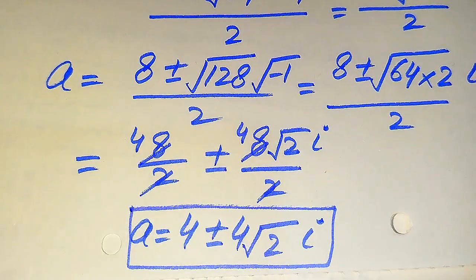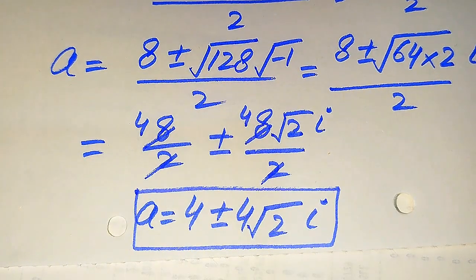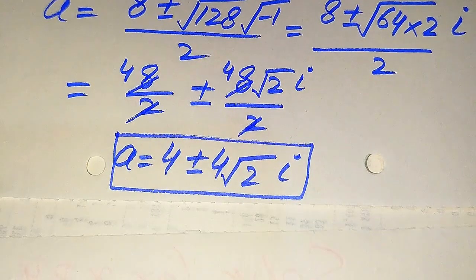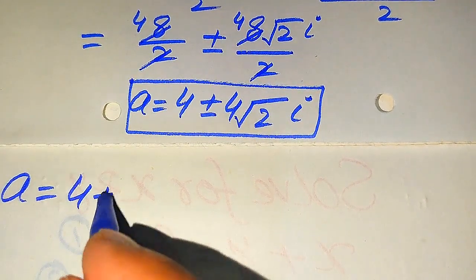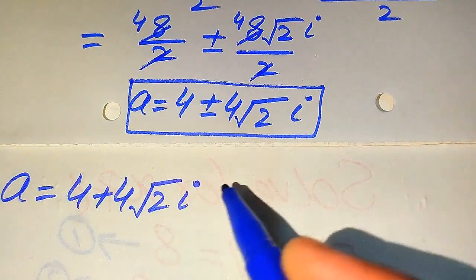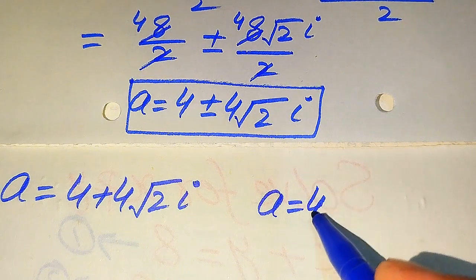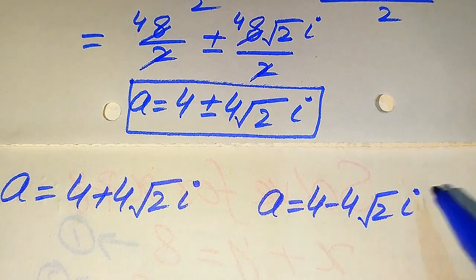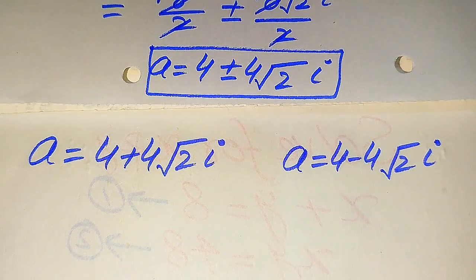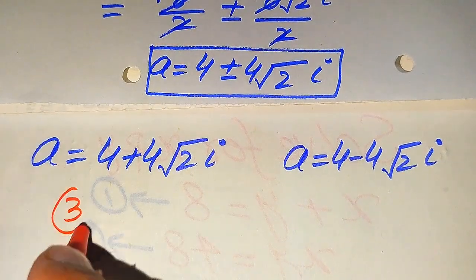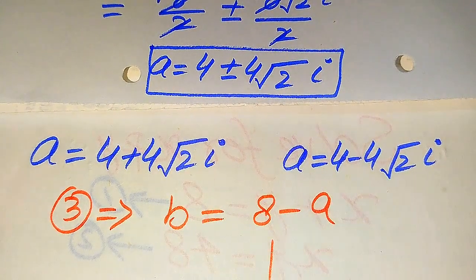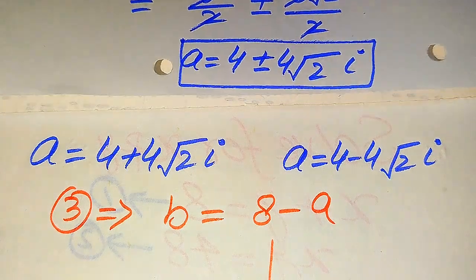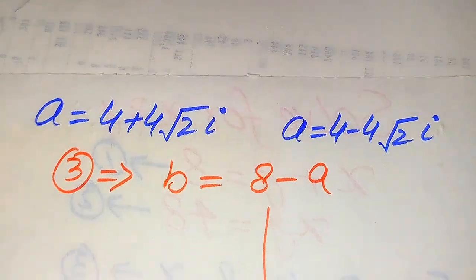These are the two complex values of a. Now we substitute these values of a into equation number three to get the values of b. The first value is a equals 4 plus 4 times square root of 2 iota, and the second value is a equals 4 minus 4 times square root of 2 iota. Equation number three states b equals 8 minus a. We substitute the above two values of a to get the corresponding values of b.